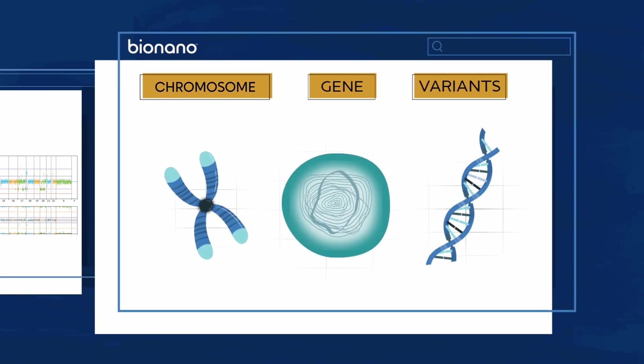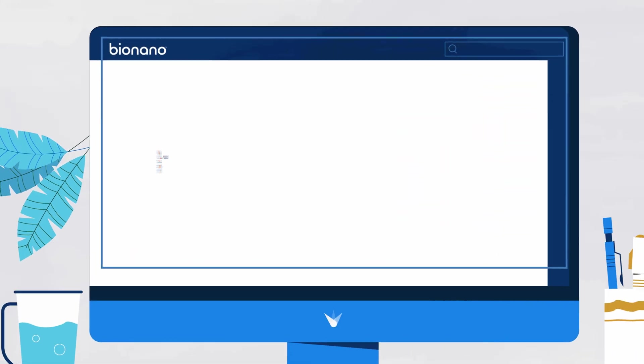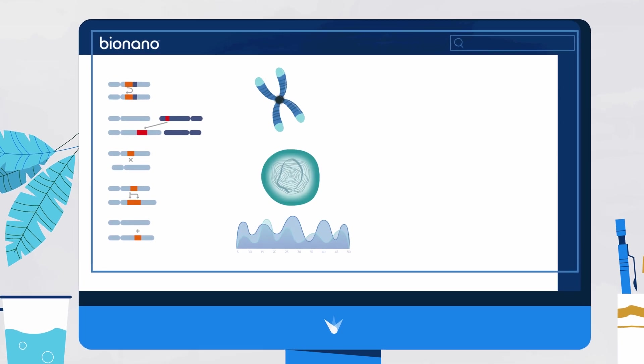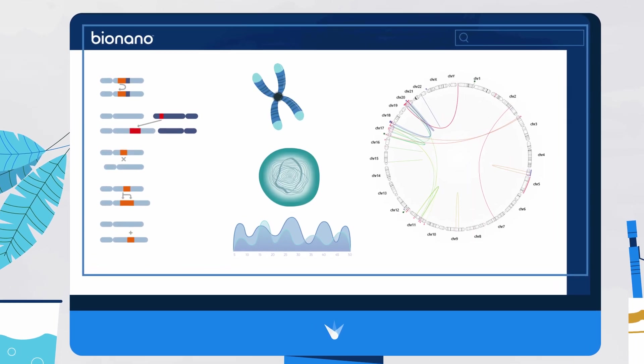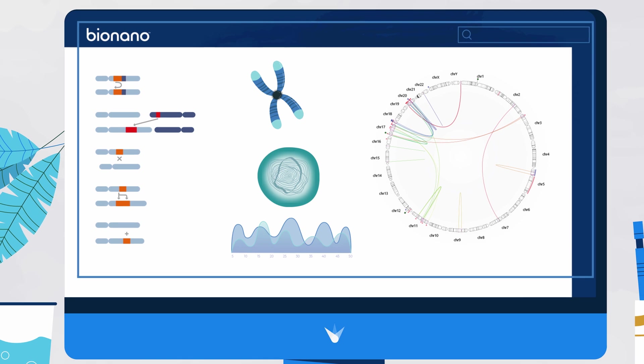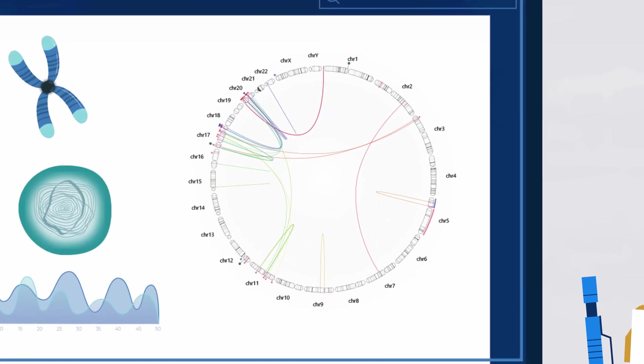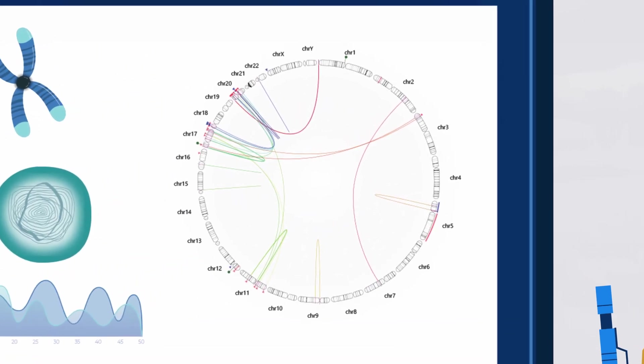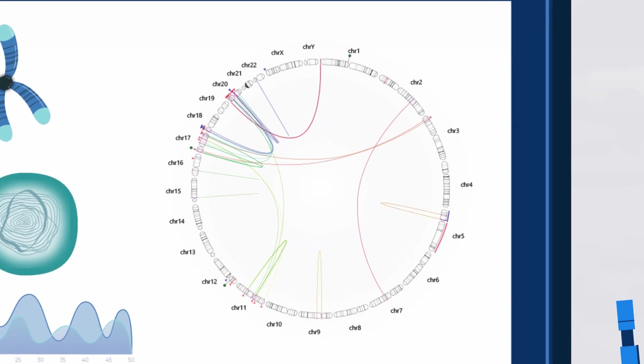gene, and variant levels. You can also view multiple types of variants together so you understand how variants play a role individually and in the context of each other and the surrounding genome structure, such as viewing bi-allelic events happening in the same region of the genome.